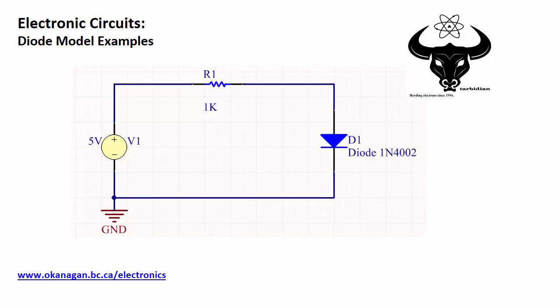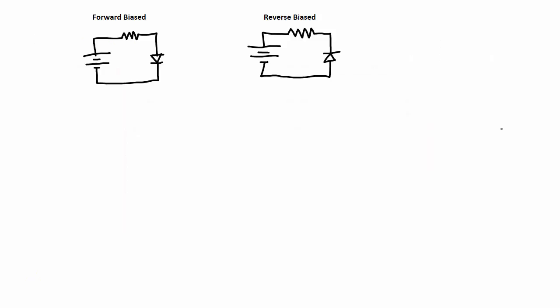Hi there. Welcome to the Electronics channel. In this video, I want to show a few diode model examples. What I'm going to be doing is looking at circuits like this one here and applying different ways to model the diode to calculate the voltages and currents in the circuit. I'm going to look at two different configurations of diodes — forward biased and reverse biased — under a few different models.